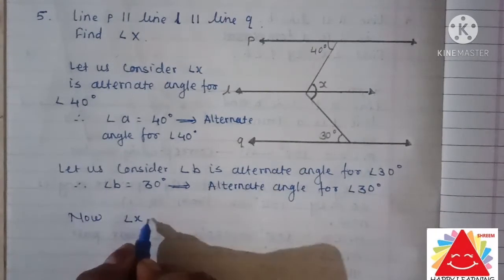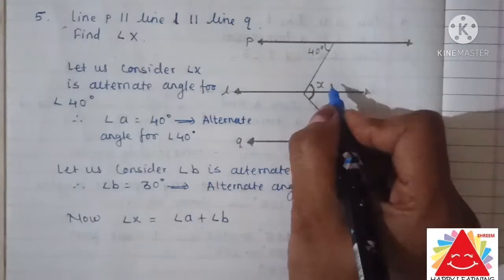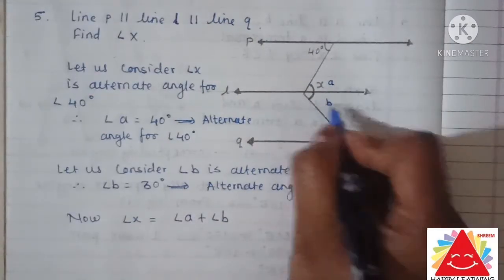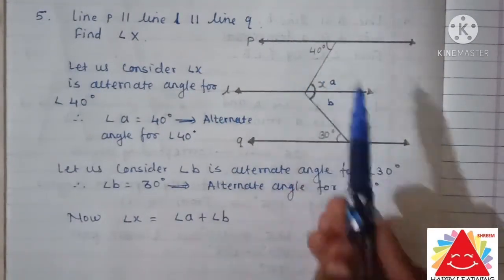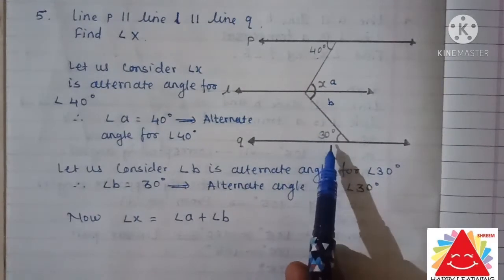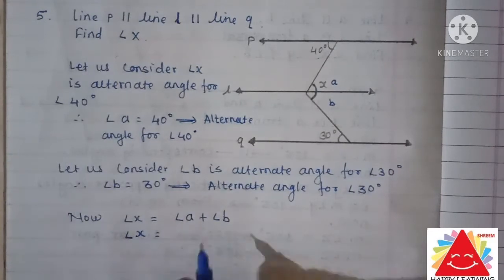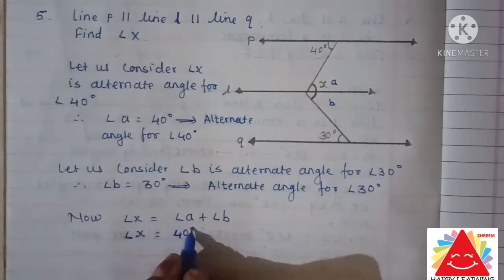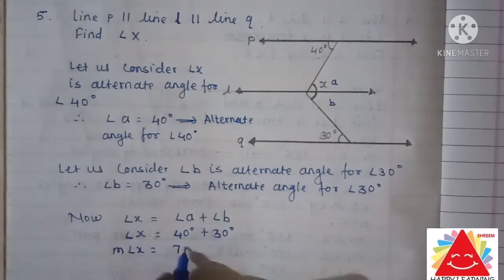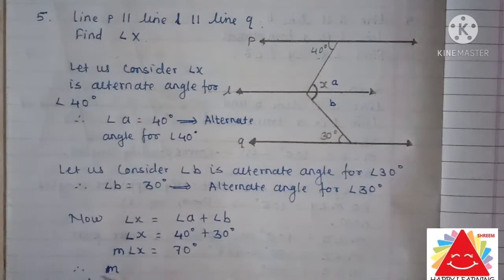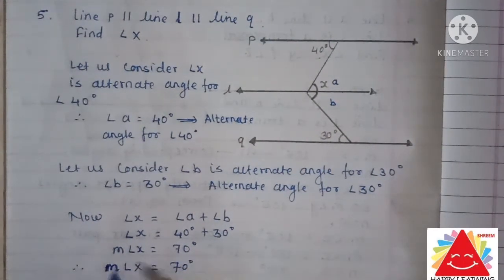Now, angle X equals angle A plus angle B. Angle A is the alternate angle for 40 degrees, and angle B is the alternate angle for 30 degrees. Therefore, angle X equals 40 degrees plus 30 degrees, which means the measure of angle X equals 70 degrees.